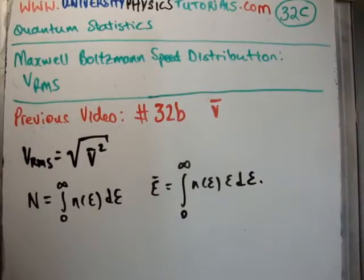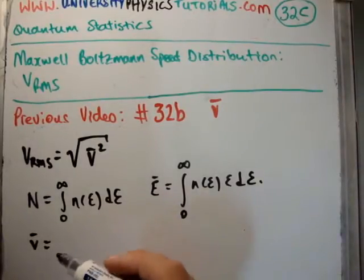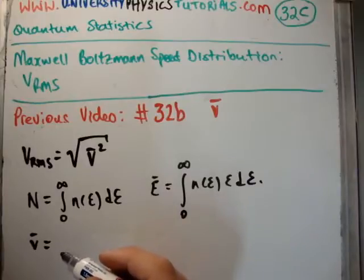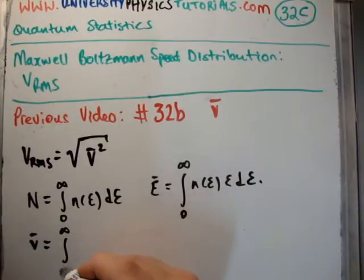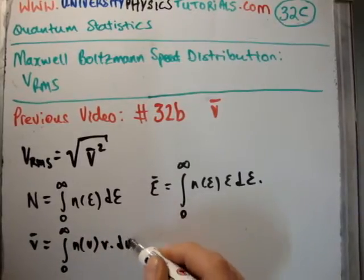And we made the analogy this time that to get the total average speed for a single particle, we had to do an analogous integral to get n of V times V dV. And of course, for that reason there are three factors of V in the middle of it, because there are two factors automatically in n of V.